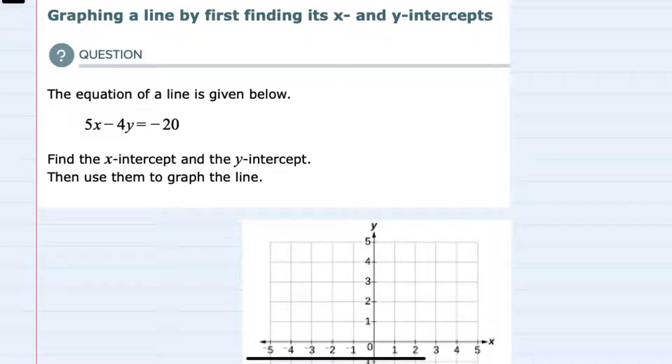We're given the equation 5x minus 4y equals negative 20, and we're asked to graph by first finding the x and y-intercepts.